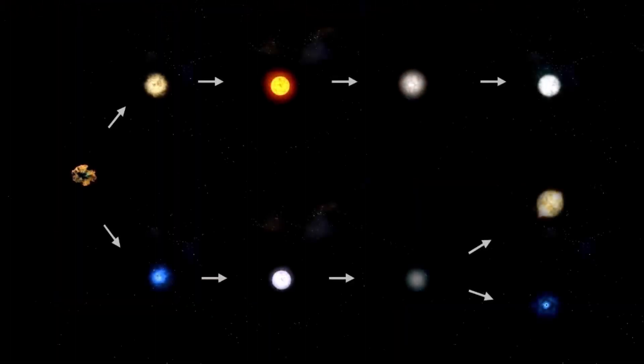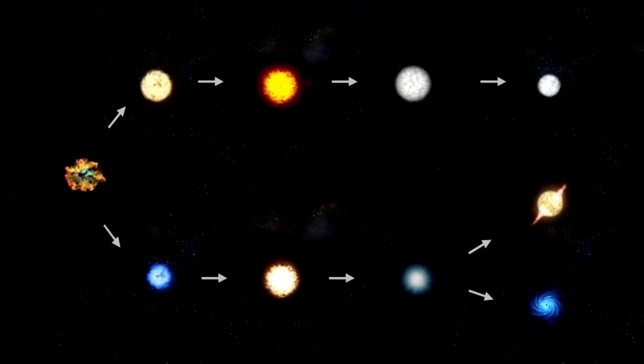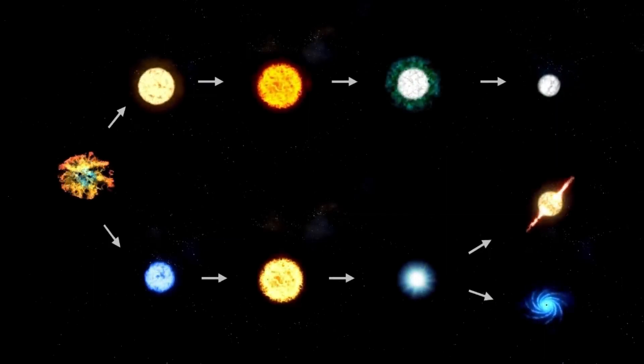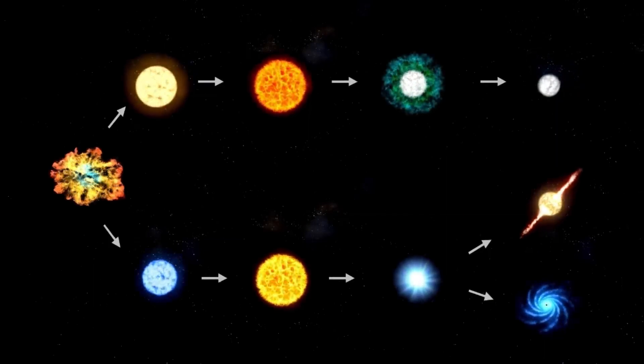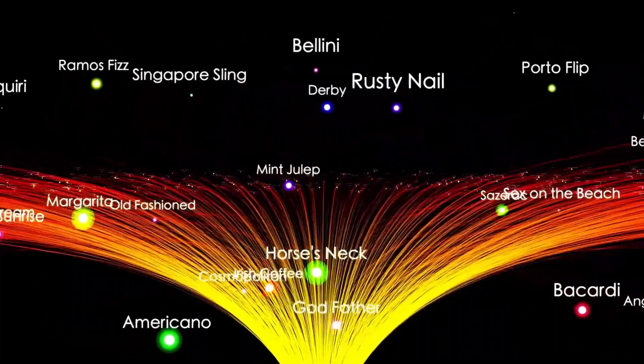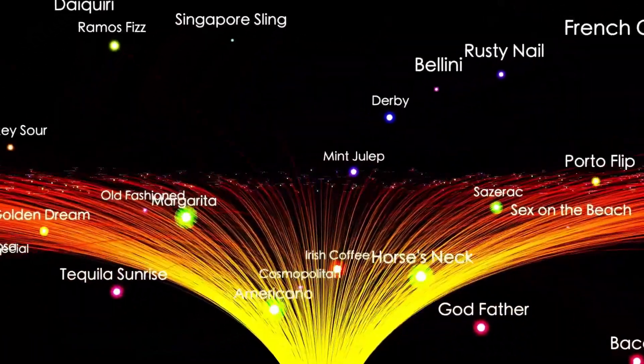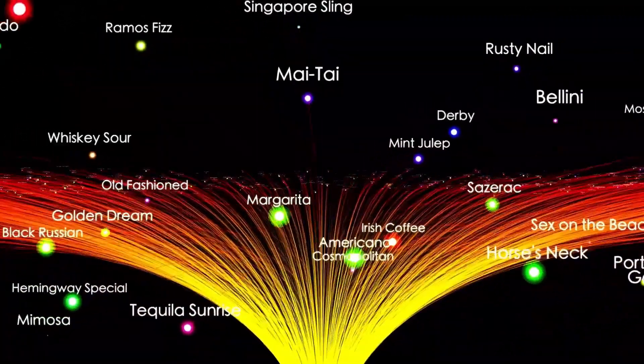Although many people are unaware of this fact, it is possible to spot Betelgeuse in the night sky during the winter months in the Northern Hemisphere. Just look up at the sky and focus on the constellation Orion and Canis Major to see this dazzling star in all its splendor.